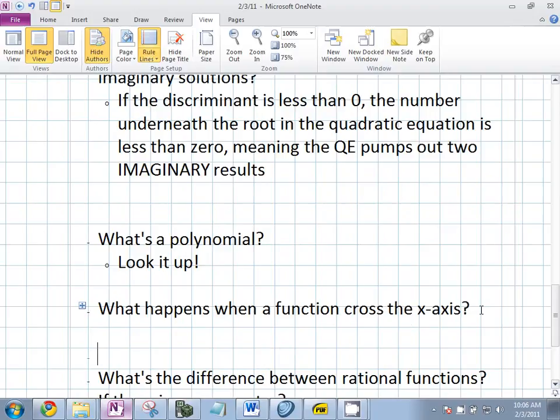What happens when a function crosses the x-axis? It does. The numerator is zero there. How do you make a fraction equal to zero? What's the only way to make a fraction equal zero? The numerator is zero. So, a function crosses the x-axis when the numerator is zero.